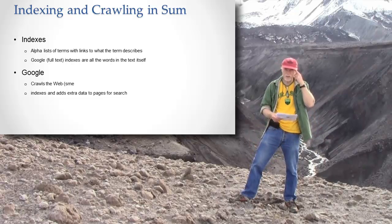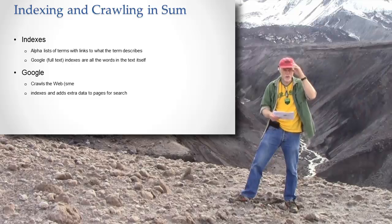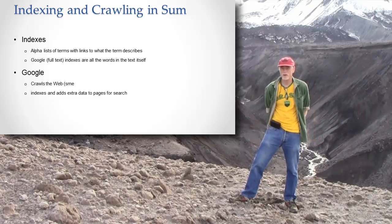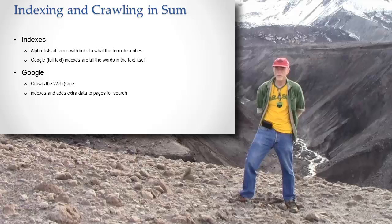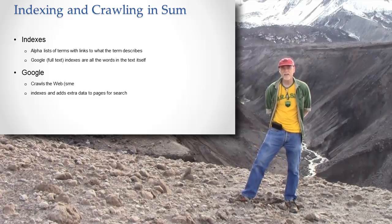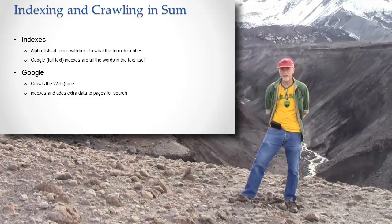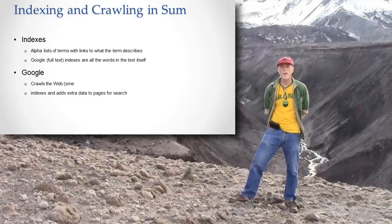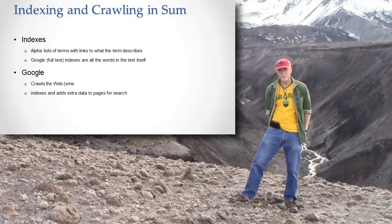So that's the general idea of an index, and the specific idea of the Google index. And there's at least two — I think there's probably likely to be a lot more than two, but I only know about a title index, which is a full text index of all the words in the titles of all the pages that it indexes, and a content index, which is all the words in the body of the web page being indexed.